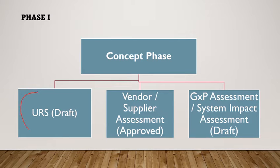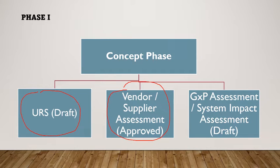First, we need to prepare the user requirement specification in draft mode. Basically, the URS defines the business processes — that is end user requirements, operational requirements and regulatory requirements. All these requirements must be testable and verifiable. Further, we need to perform the vendor or supplier assessment to evaluate the maturity of the vendor and product. The vendor must follow regulatory compliance, and we need to evaluate the vendor quality management system, length of time in the market, product complexity and after-market services. This document must be approved before moving on to the next deliverables.